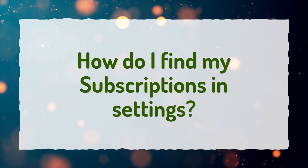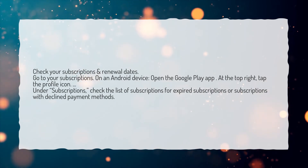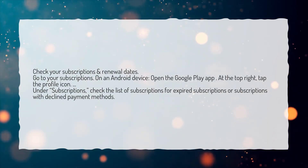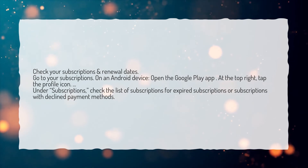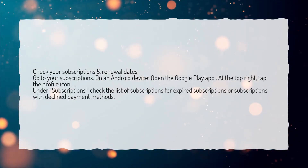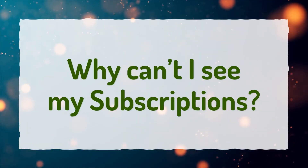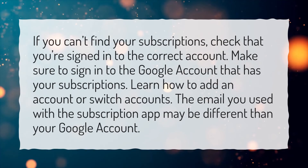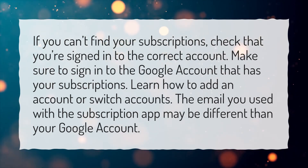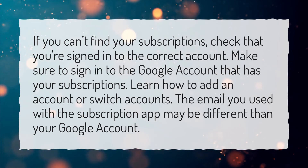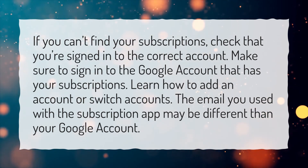How do I find my subscriptions in settings? Check your subscriptions and renewal dates — go to your subscriptions. On an Android device, open the Google Play app. At the top right, tap the profile icon. Under Subscriptions, check the list of subscriptions for expired subscriptions or subscriptions with declined payment methods. If you can't find your subscriptions, check that you're signed in to the correct account. Make sure to sign in to the Google account that has your subscriptions. Learn how to add an account or switch accounts. The email you used with the subscription app may be different than your Google account.